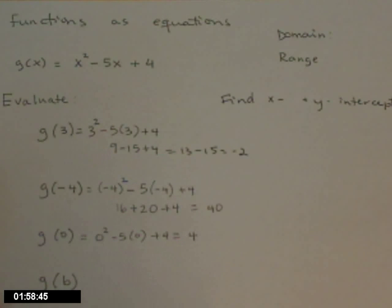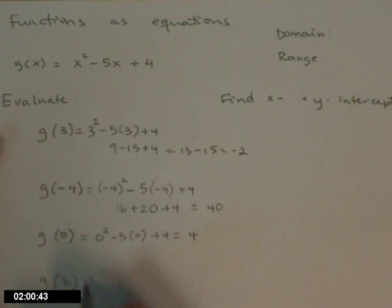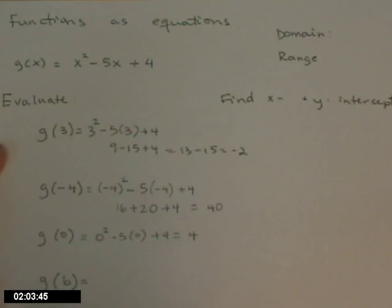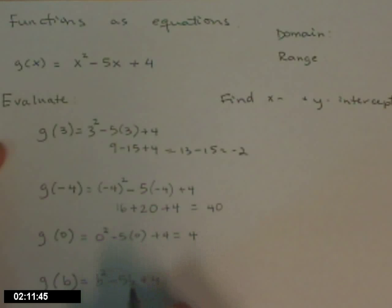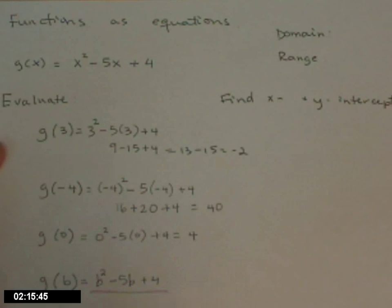Now, if we're evaluating this at a letter — and this is just prepping you for something that comes next — g of b means every place I have an x, I replace it with b. And after you do that, there's nothing more we can do; I can't tidy it up any further. So that expression is the answer.